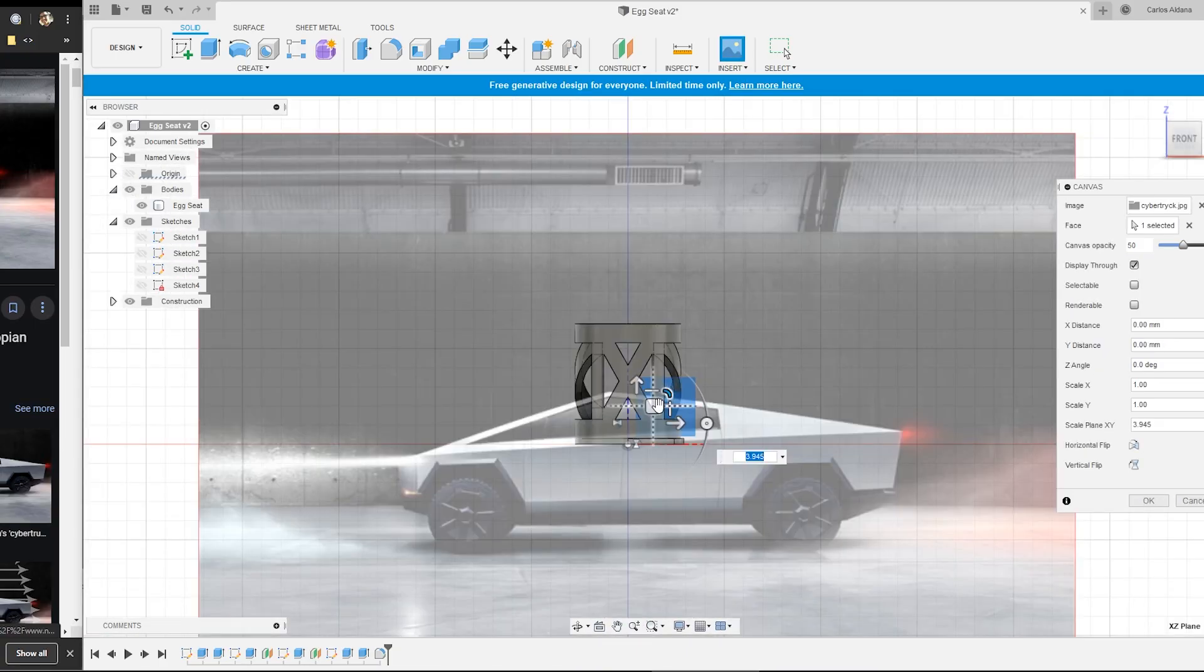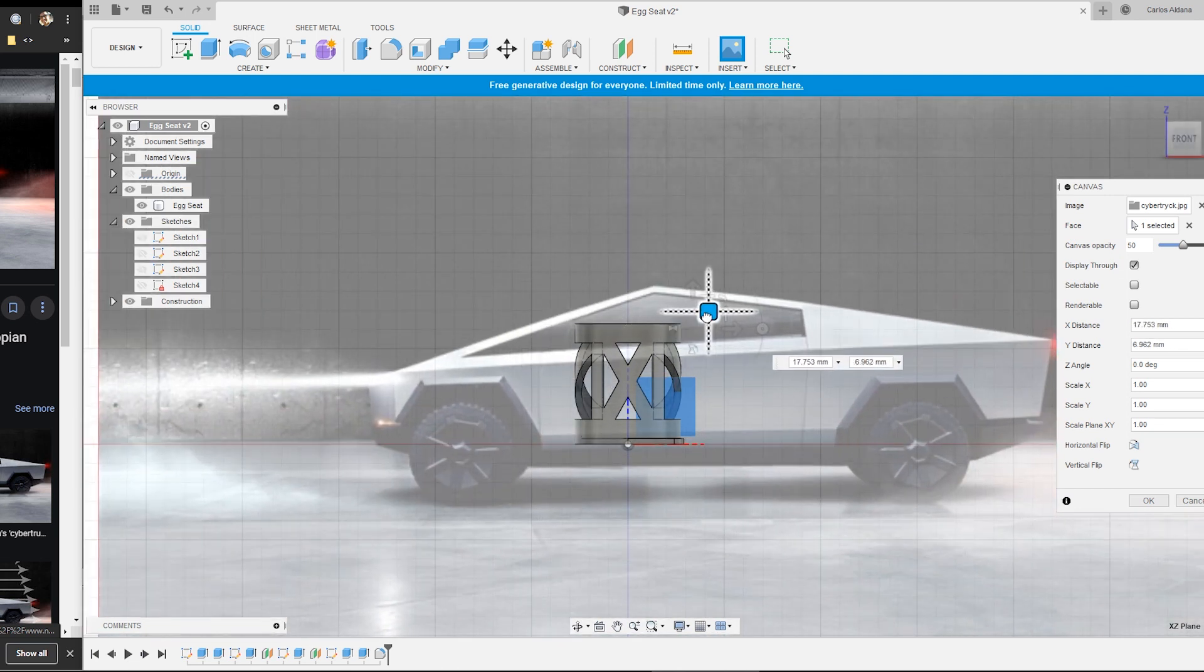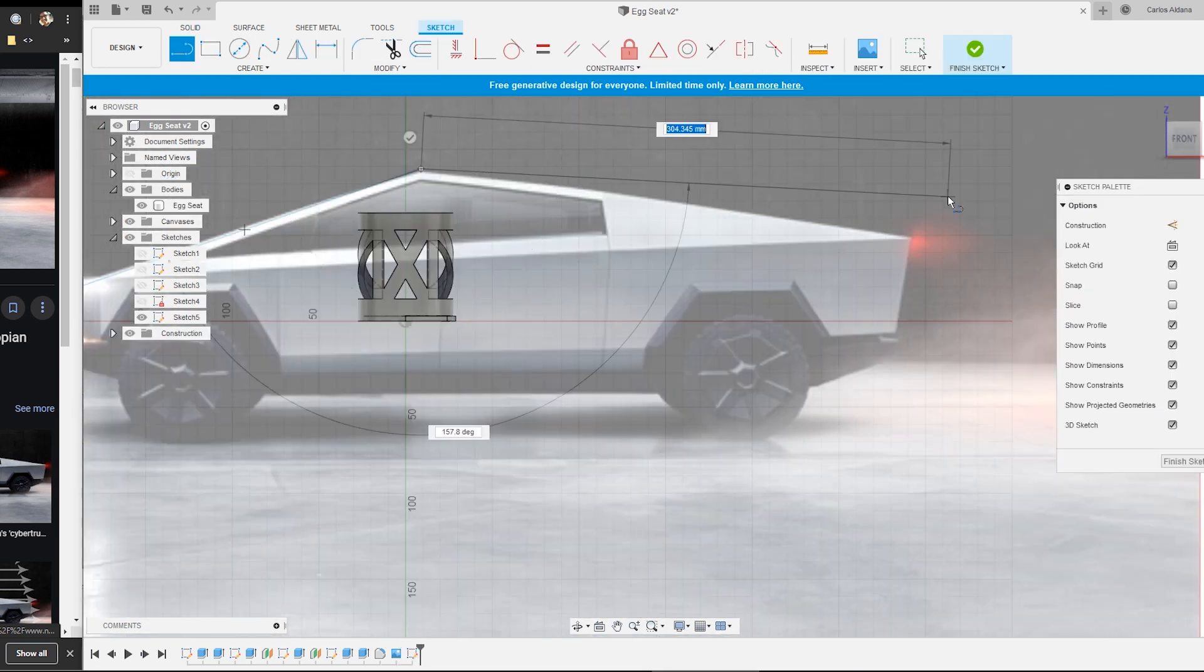For the body of the Cybertruck I got a picture from Google. Then I scaled it so my egg would be about the size of a human.